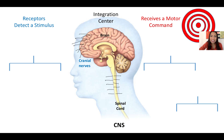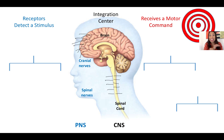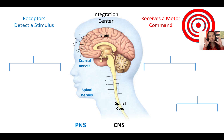These nerves — the cranial nerves, called cranial because they come out from the brain, and the spinal nerves, the ones coming out from the spinal cord — along with their receptors form the peripheral nervous system. The peripheral nervous system is any nervous tissue outside the central nervous system, outside the brain and the spinal cord. It consists of the cranial nerves, the spinal nerves, and the neural receptors that detect those stimuli — at least some of them.